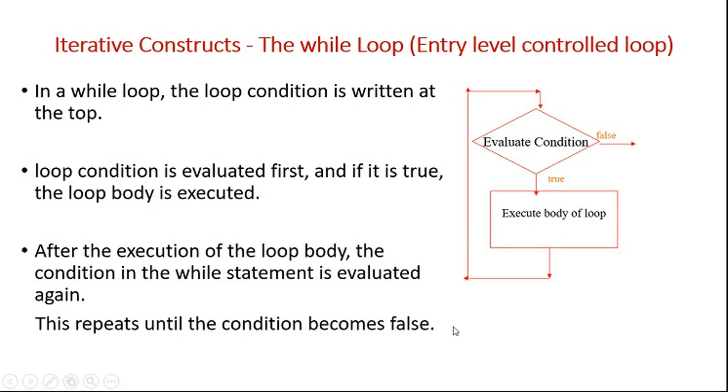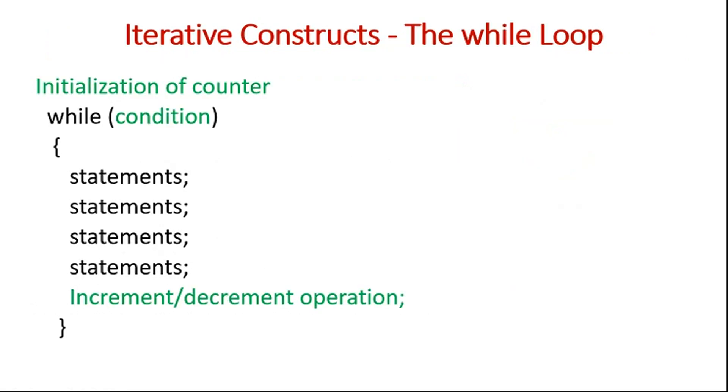Let's see the next type of iterative construct, that is the do while. But before that, let's see the syntax. How to represent it syntactically. The while loop: initialization of counter variable, which will be used to count how many times the loop has to be repeated. While is the keyword which is used over here.